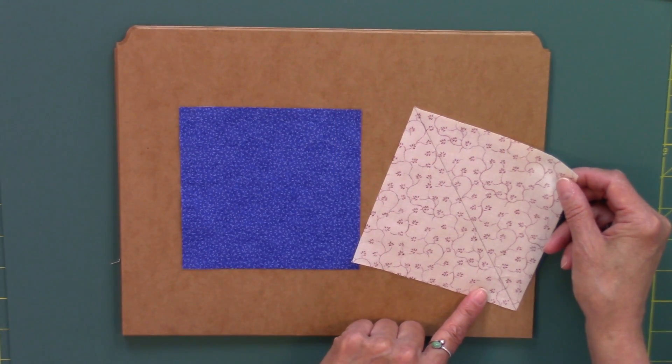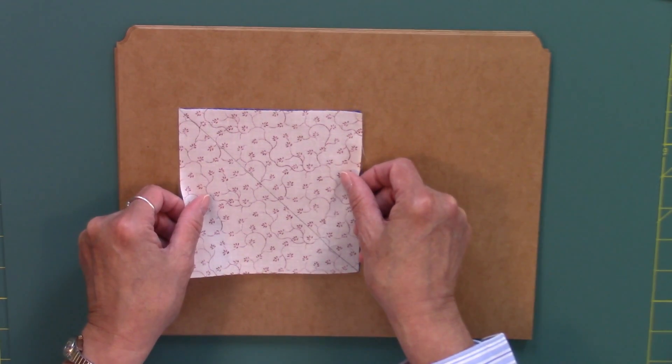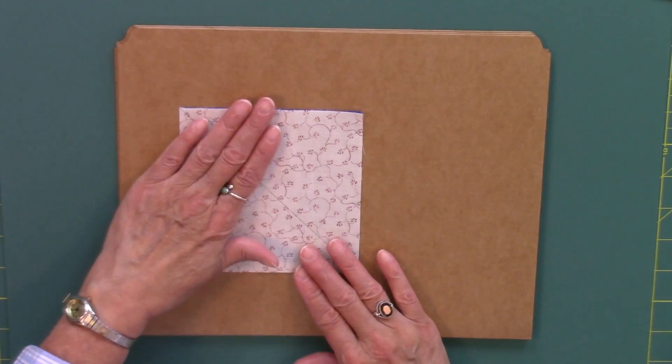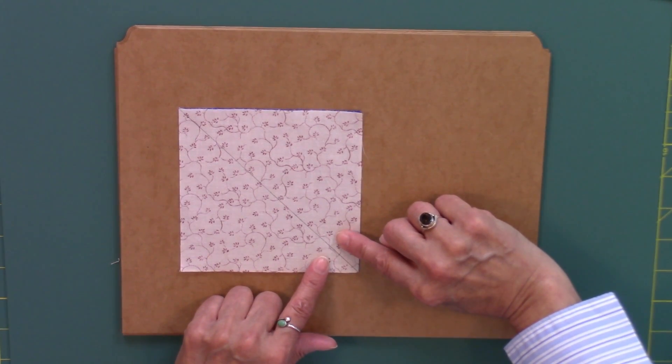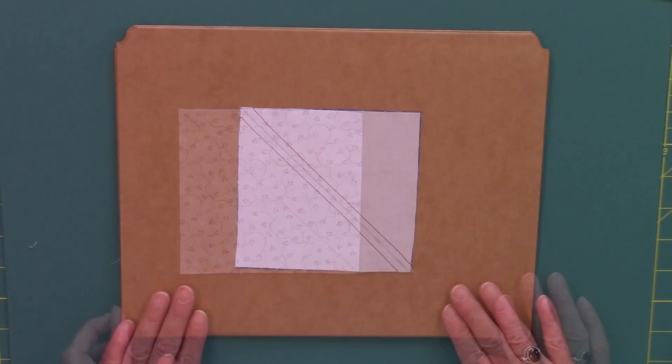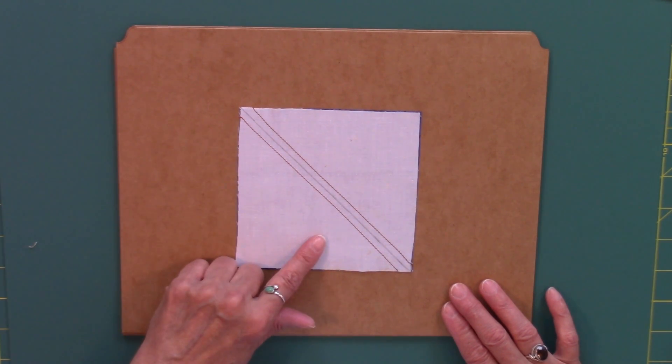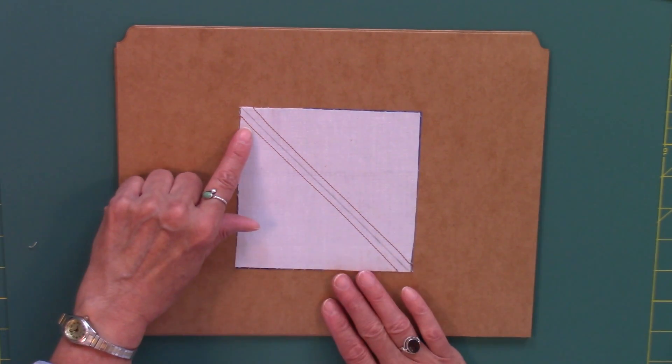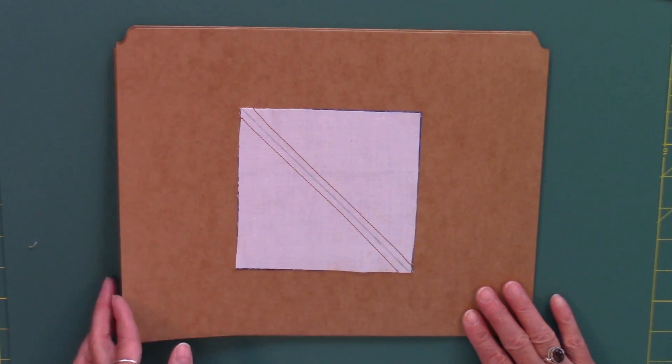After I have drawn my diagonal line I go ahead and put the two fabrics right sides together and now it's time to sew seams on each side of this diagonal line. So that you're able to see the seams a little bit better I went ahead and on this demo piece use just a plain white muslin for the background fabric. So a scant quarter of an inch seams on each side of this diagonal line.